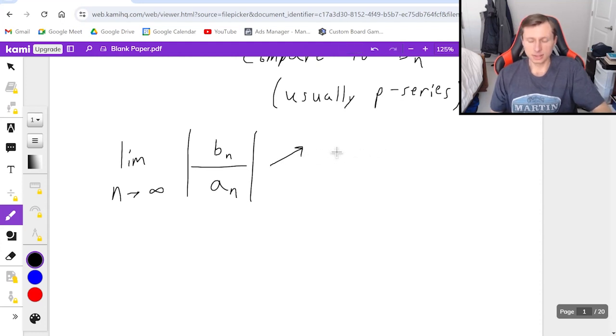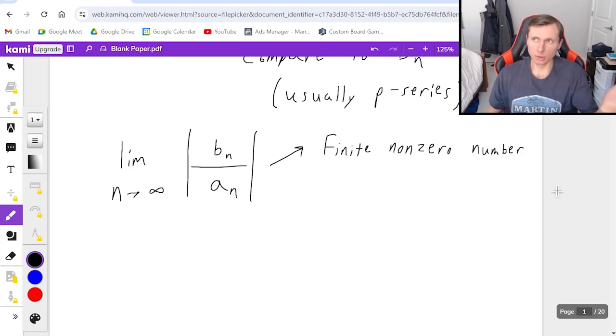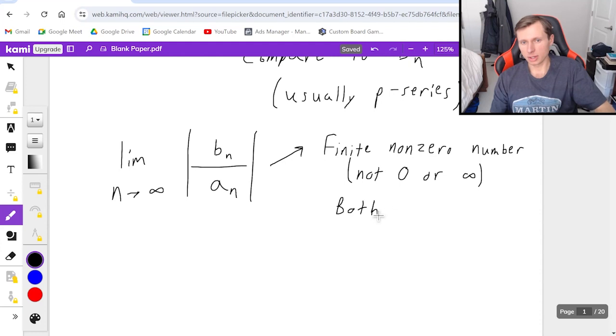Now you're going to get one of two things when it comes to the limit comparison test. Number one, you will get some finite non-zero number, such as 5, 12, negative two-fifths, 4,000. It just can't be zero, and it can't be infinity. So not zero or infinity. If this is the case, then the result is both series will either converge, if that was your guess, or diverge, if that was your guess.